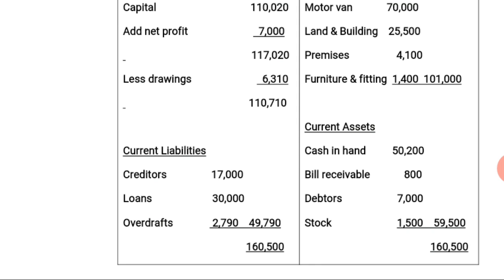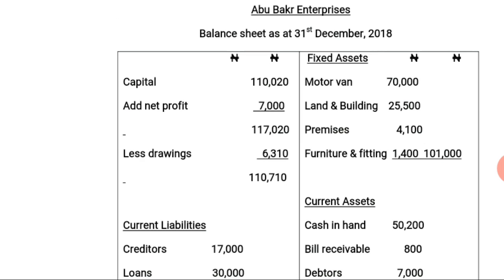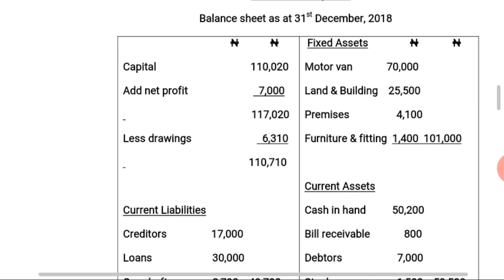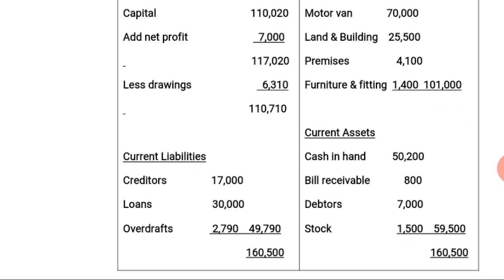Moving to the left-hand side, we look at capital. We have capital of 110,020 Naira. Adding the net profit of 7,000 Naira gives us 117,020 Naira. From that we deduct drawings of 6,310 Naira, arriving at 110,710 Naira as the capital employed figure.